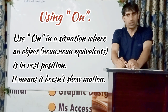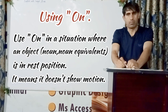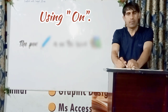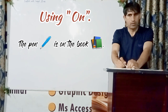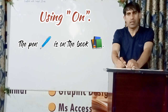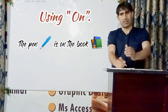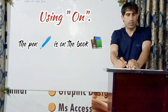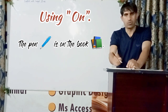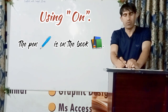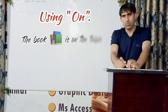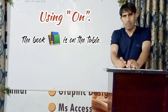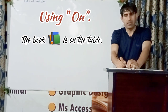If an object doesn't show movement, we use 'on.' For example, 'the pin is on the book' — in this example the pin doesn't show movement, it is in a rest position, and that's the reason we use 'on.' Another example: 'the book is on the table' — here the book is in a rest position and doesn't show movement.